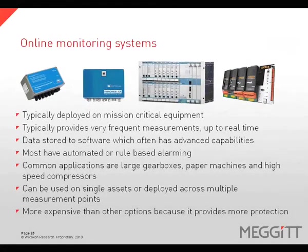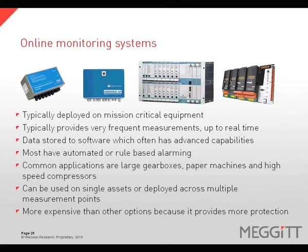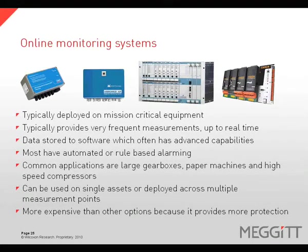Online monitoring systems are typically deployed on mission-critical assets. They provide frequent measurements up to real-time that are stored for further analysis using advanced software. Most online systems have automated or rule-based alarming, and can be used for a single asset or deployed across many assets. They are commonly used on equipment such as high-speed compressors or large gearboxes. Online systems can be more expensive than other options but provide more protection.